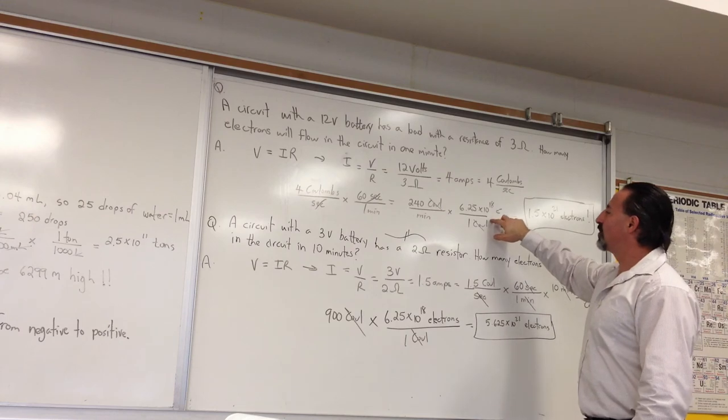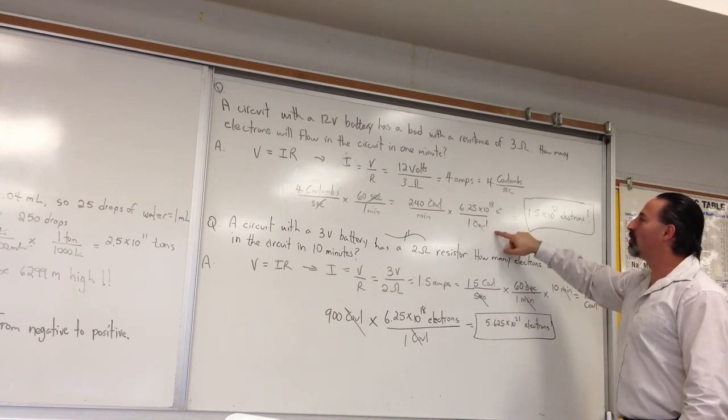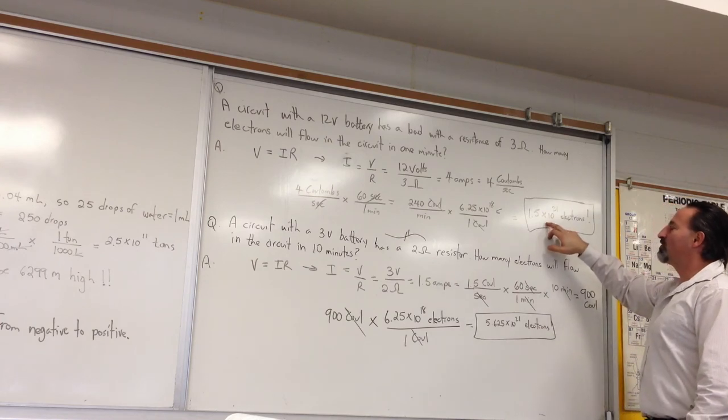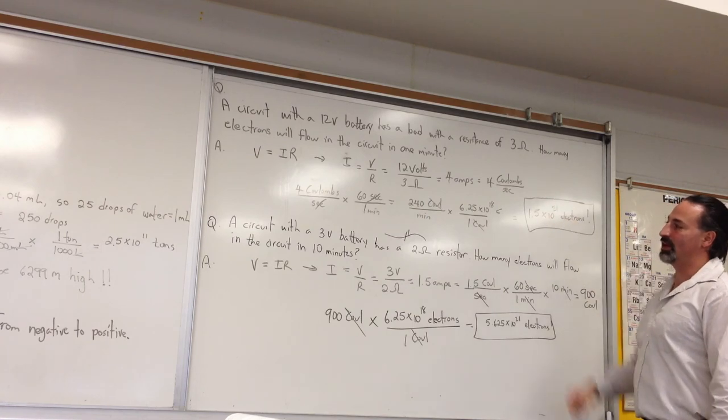And, we then multiply by 6.25 times 10 to the 18 electrons per coulomb. We'll get that you have 1.5 times 10 to the 21 electrons flowing through that circuit in one minute.